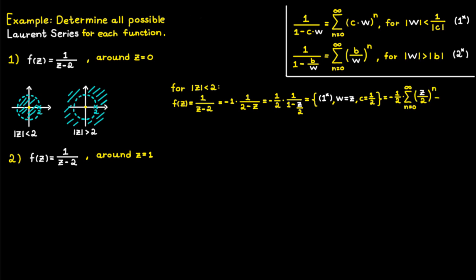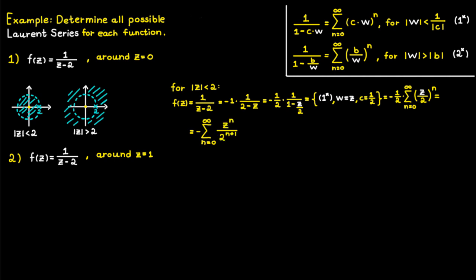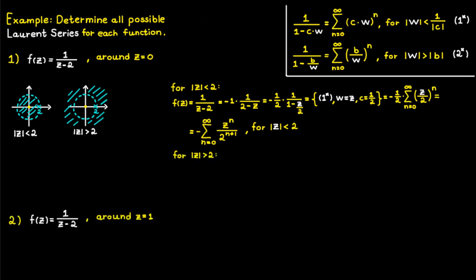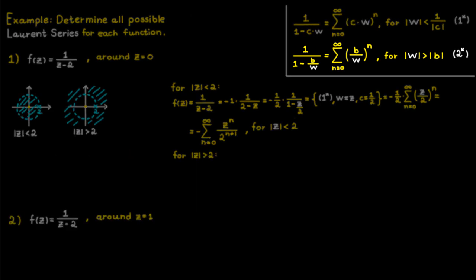By moving the factor of one-half from outside to inside the sum, we get our final expression. This is valid if the absolute value of c is less than 1 divided by one-half, which is the same as saying the absolute value of c must be less than two — exactly what we wanted for this domain.